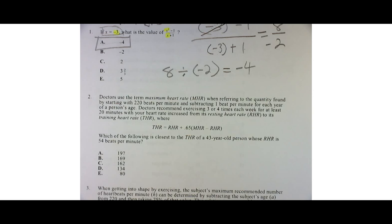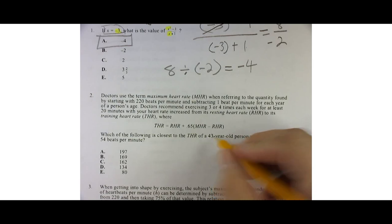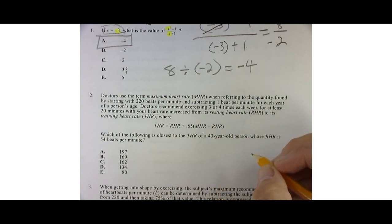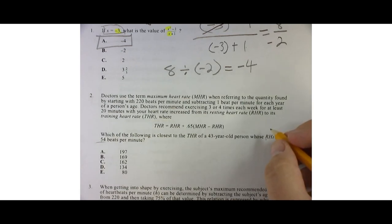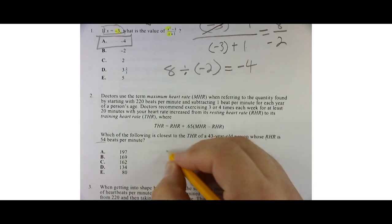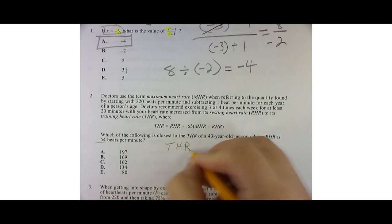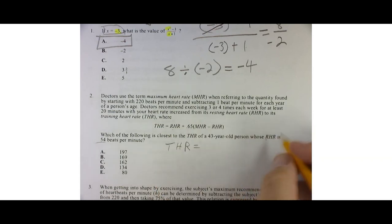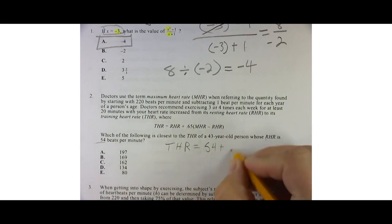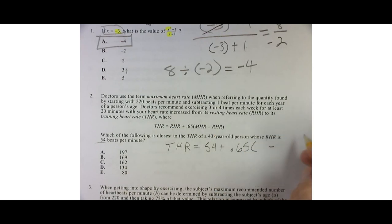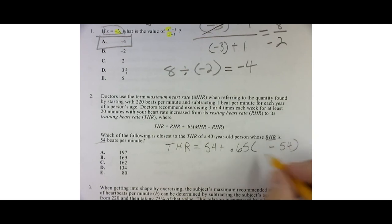So it says which of the following is closest to a 43-year-old person whose RHR is 54 beats per minute. Okay, so we need to find THR and I'm just going to use this equation. It says the resting heart rate is 54 so I'm going to put a 54 in here plus 0.65. Now here's the trick, MHR minus the RHR which is 54. I've got to figure this out right here before I can go.